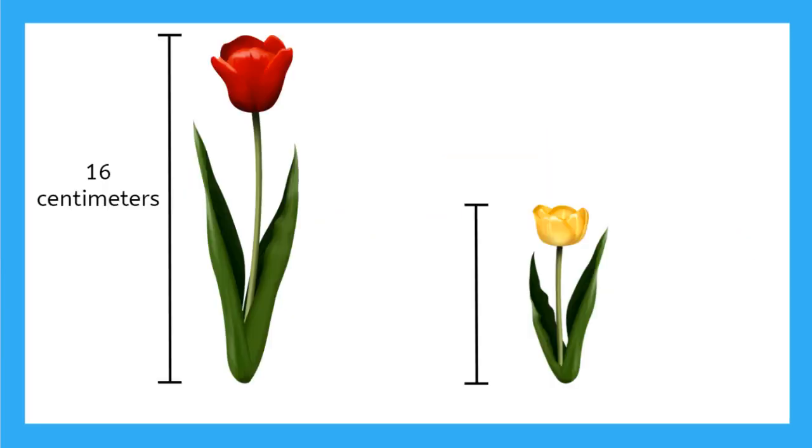Now in this problem, we see the red flower has a height of 16 centimeters, and we are trying to find the height of this yellow flower. So let's start by looking at the red flower. Let's find about the halfway point. Looks like it would be about right there, right? And if we know that the whole flower is 16 centimeters, then what would be just half? Well, 16 divided by 2 would give me 8 centimeters, and that's my halfway point. So then this up here is also 8 centimeters.